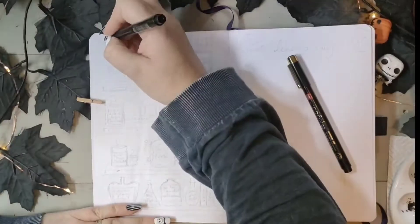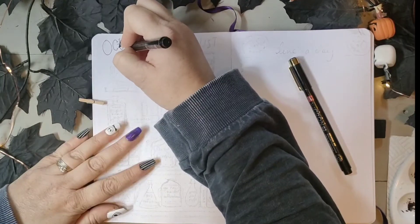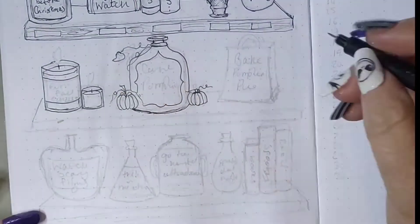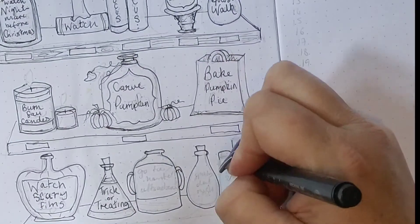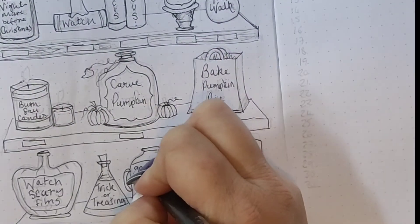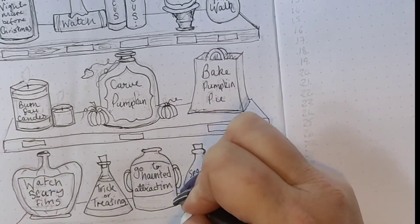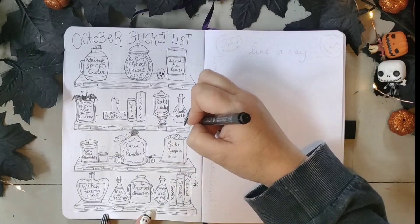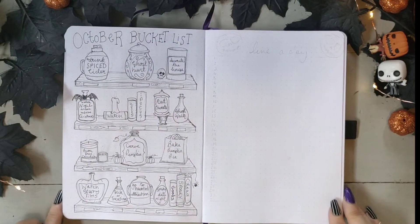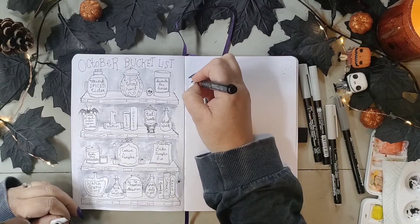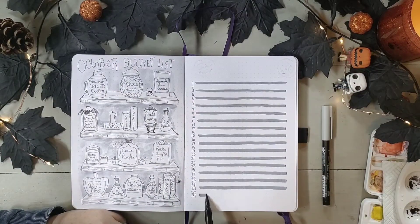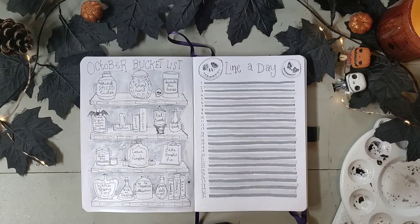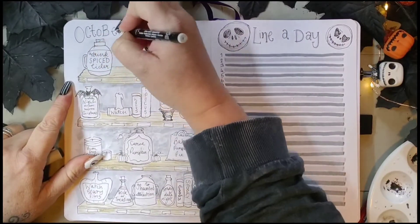Moving on to October's bucket list, I wanted to create what I imagined Sally's potion cupboard would look like, and have the labels of each item note the different experiences I'd love to achieve this month. There are a couple of things I'm bringing forward from September's list that we didn't get the opportunity to do, due to the whole household — with the exception of my husband — going down with a bug and being stuck at home feeling pretty rubbish for a good couple of weeks. I add a background and while I'm waiting for that to dry, I move on to the other page to quickly do a simple line-a-day spread, using Koi brush pens to add some grey tones and a hint of colour, then finished with the title and a couple of jackets.